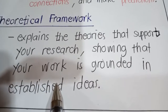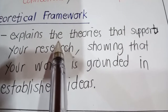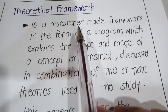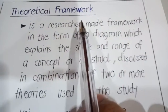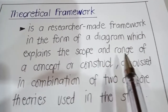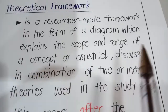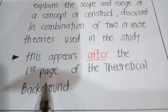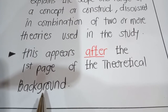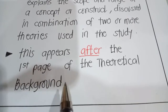In other words, your theoretical framework introduces and describes the theory that explains why the research problem under study exists. Additionally, a theoretical framework is a researcher-made framework in the form of a diagram, which explains the scope and range of a concept or construct discussed in combination of two or more theories used in the study. Take note that your theoretical framework should appear after the first page of your theoretical background.